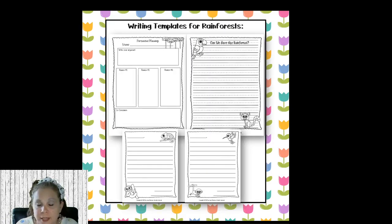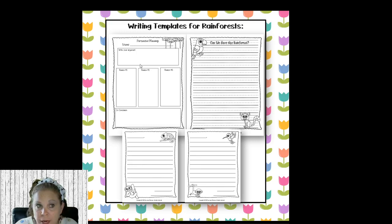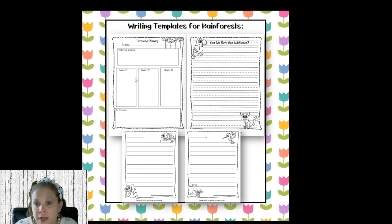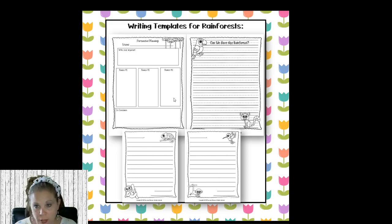These are the writing templates I have for the rainforest. There's a persuasive planning page where they write their argument, three reasons why they should save the rainforest, and a conclusion at the bottom. They transfer this over to a letter page — you can have them write a letter to the governor, the president, or the people of the world about how to save the rainforests.